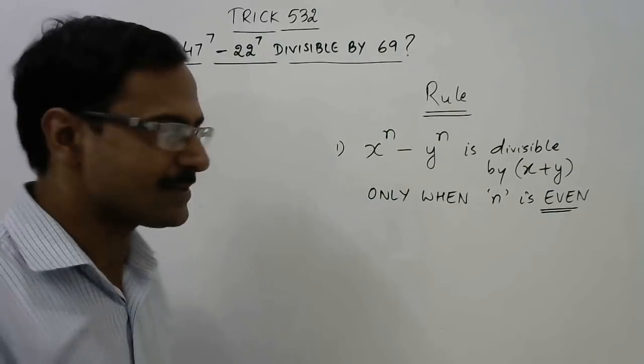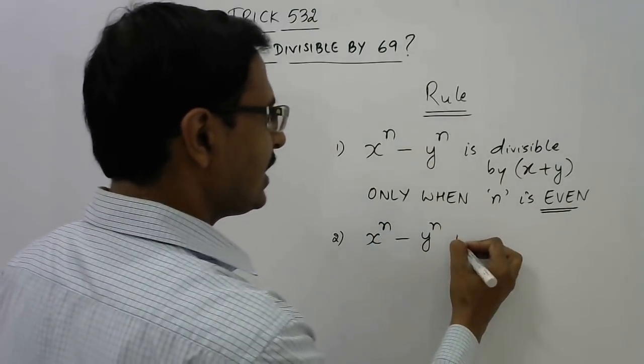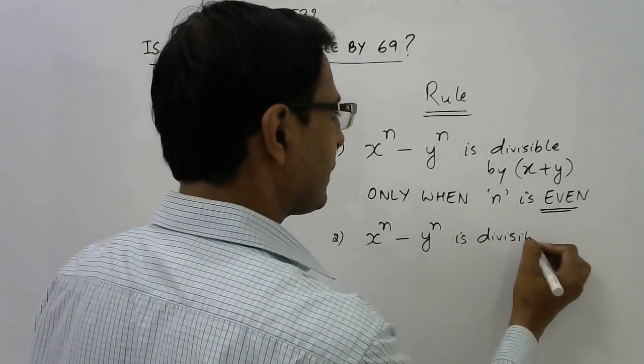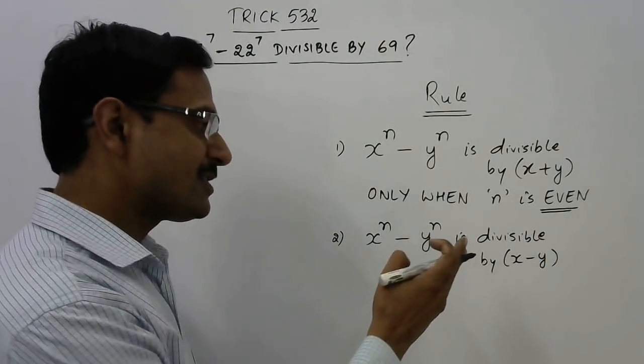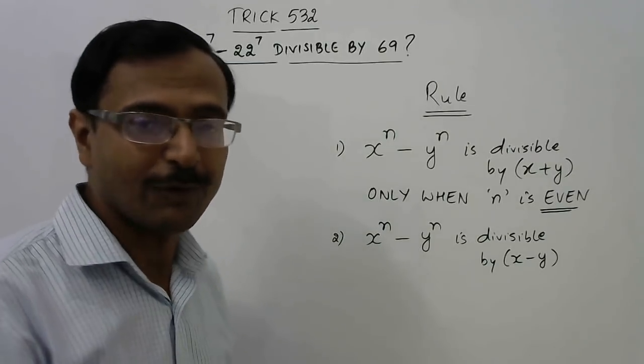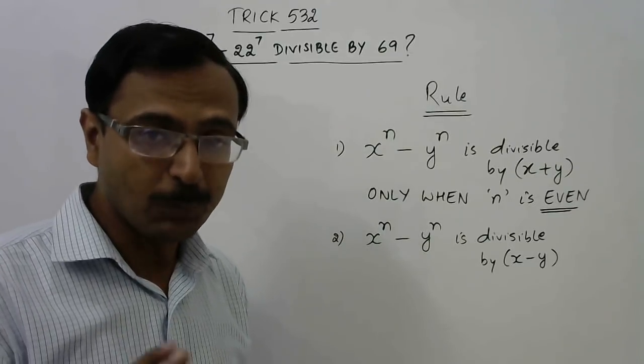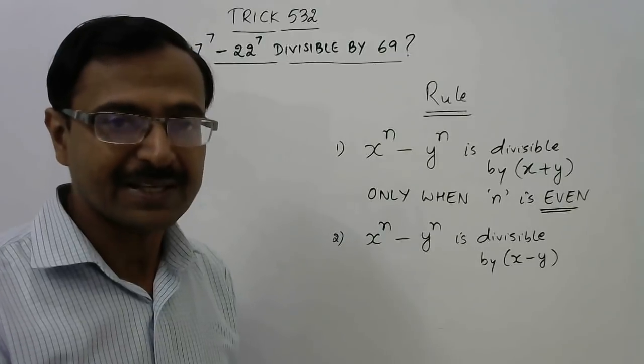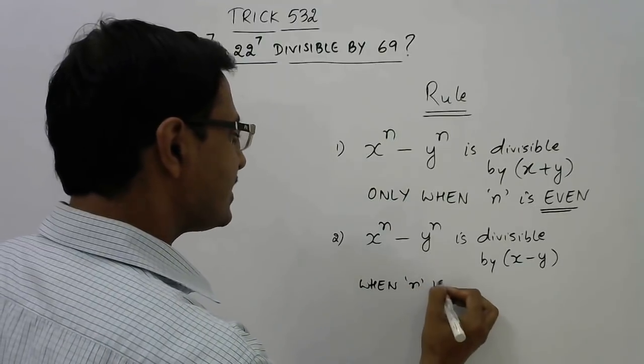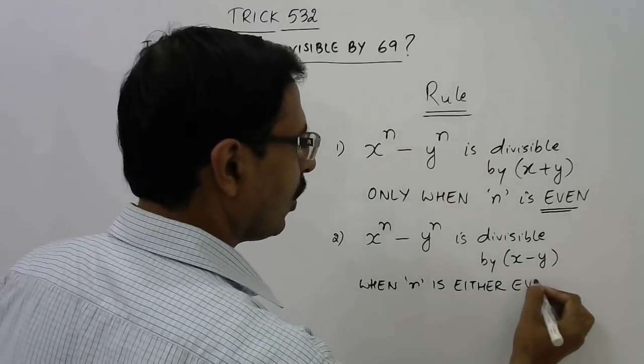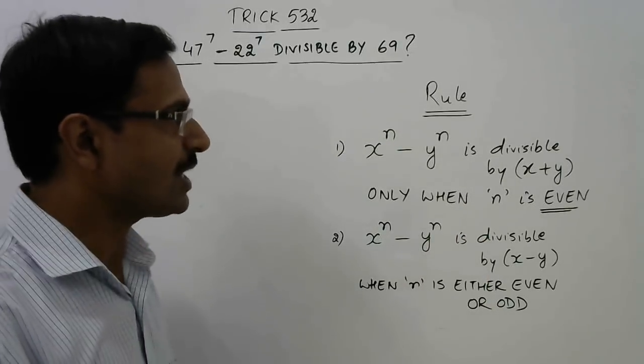We will take up some examples to understand this. The second rule states: x power n minus y power n is divisible by x minus y, the difference of the bases. Now this expression will always be divisible by x minus y irrespective of whether the power n is odd or even. So in both cases when n is either even or odd.